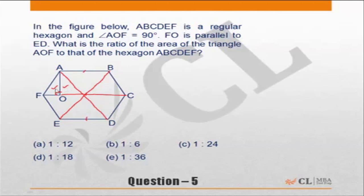That means this is half of 1 of the equilateral triangles. Whereas we have a total of 6 equilateral triangles, so 1 equilateral triangle will be 1/6 of the entire hexagon, and this is half of that.